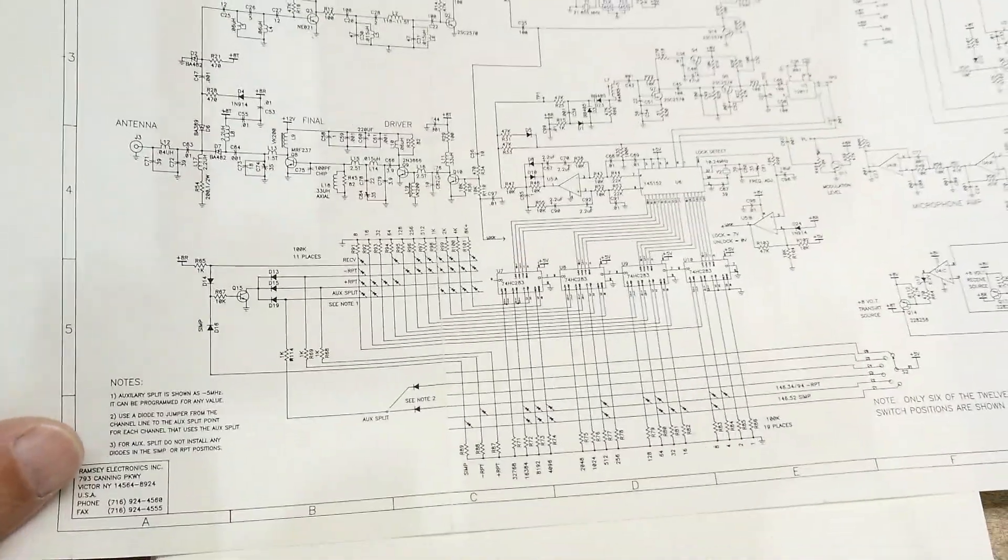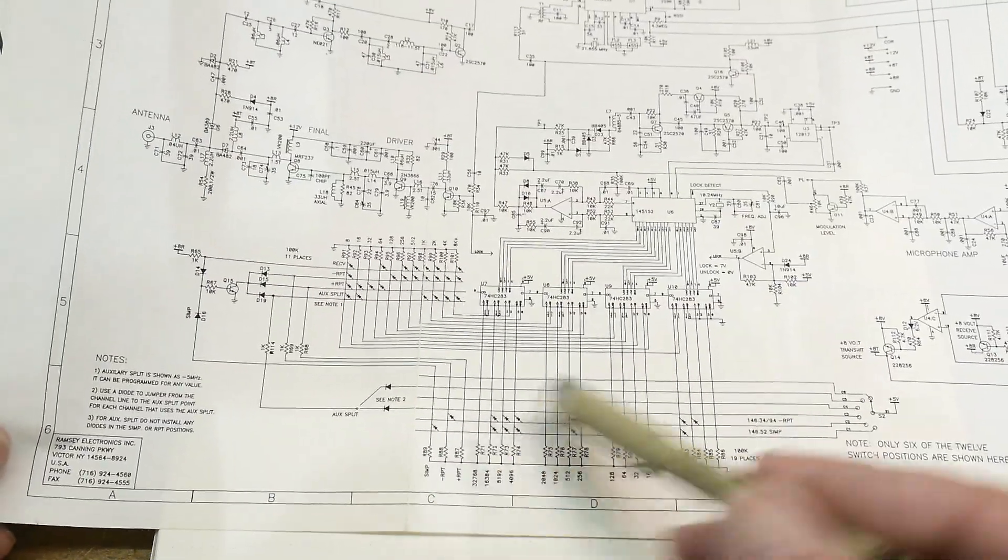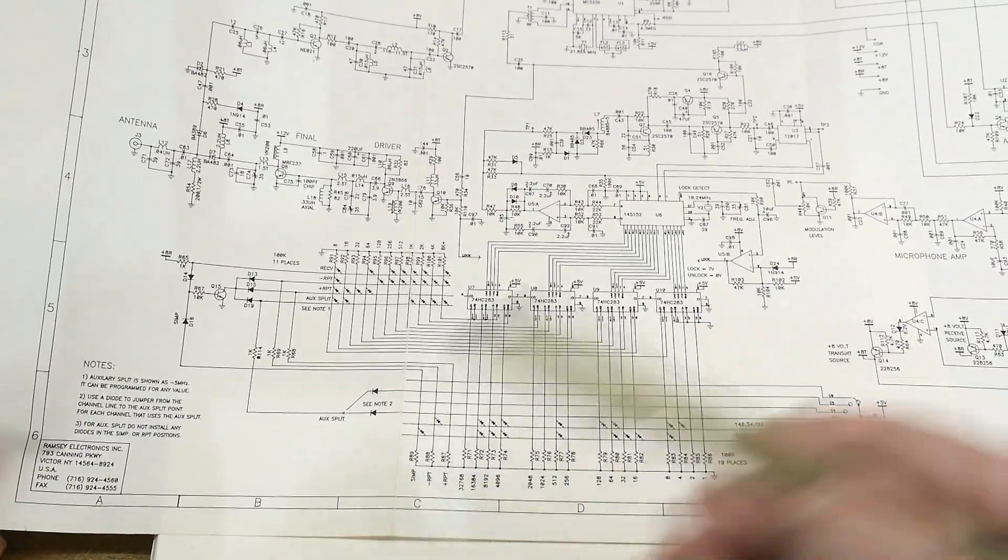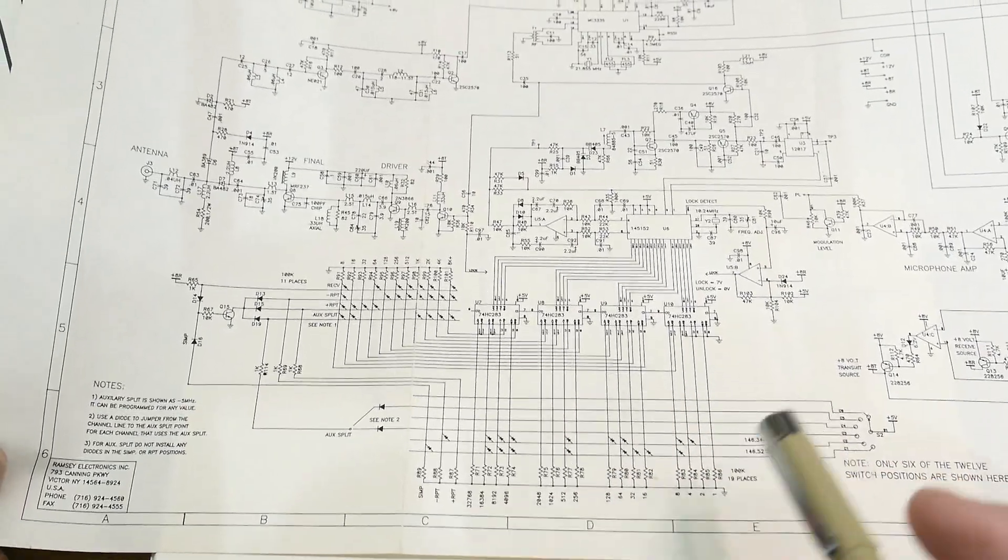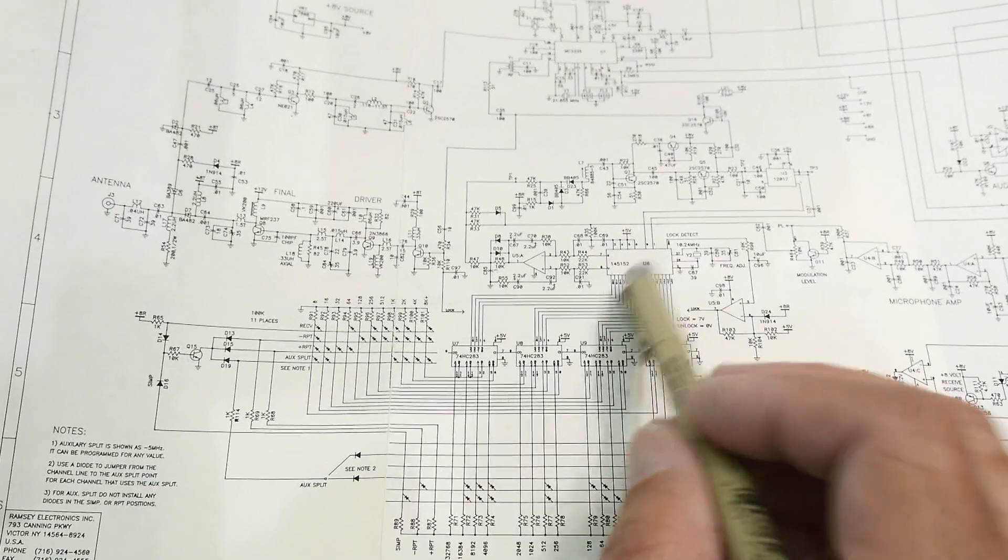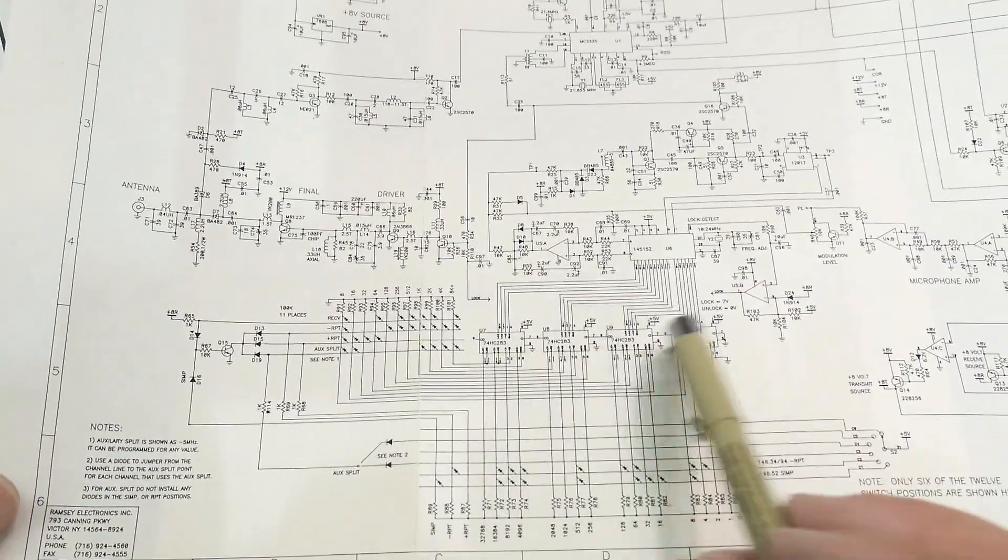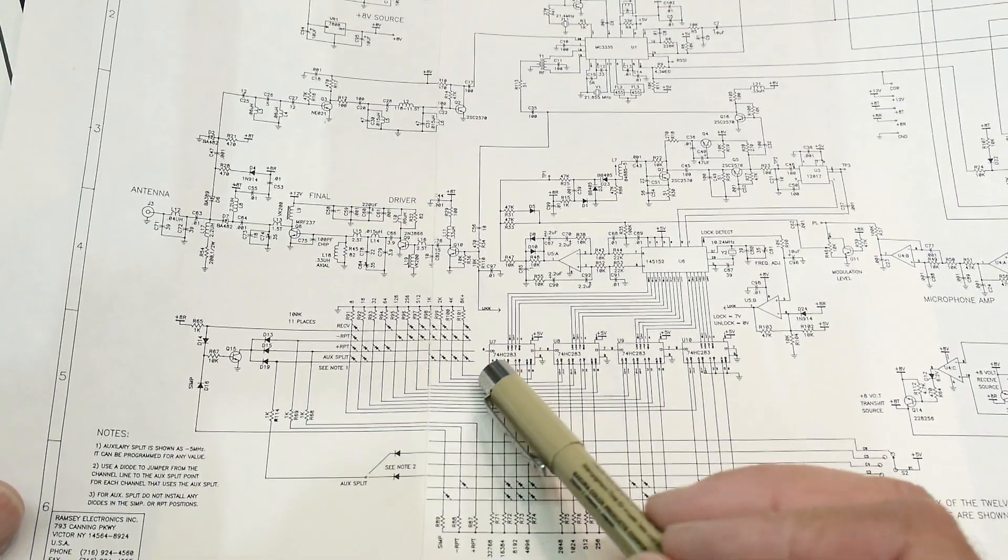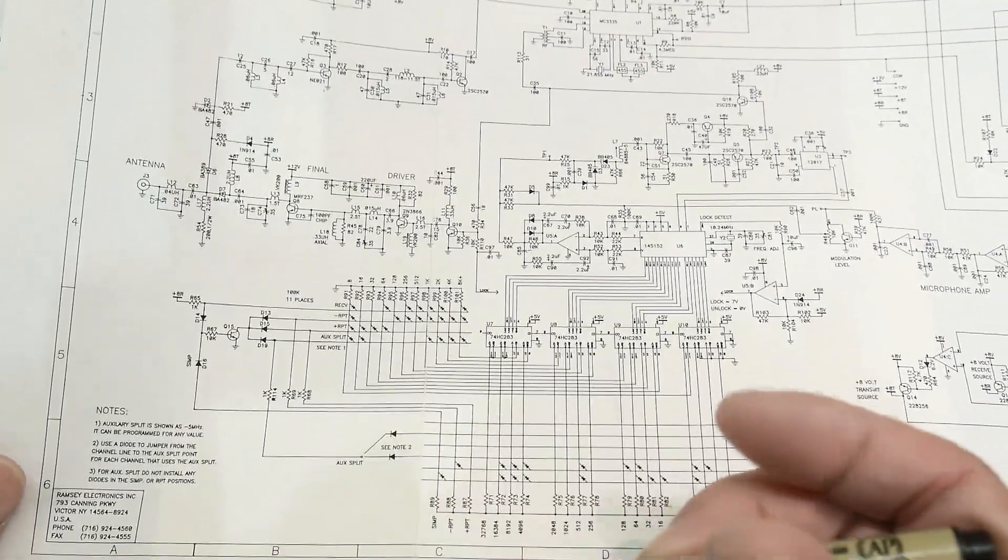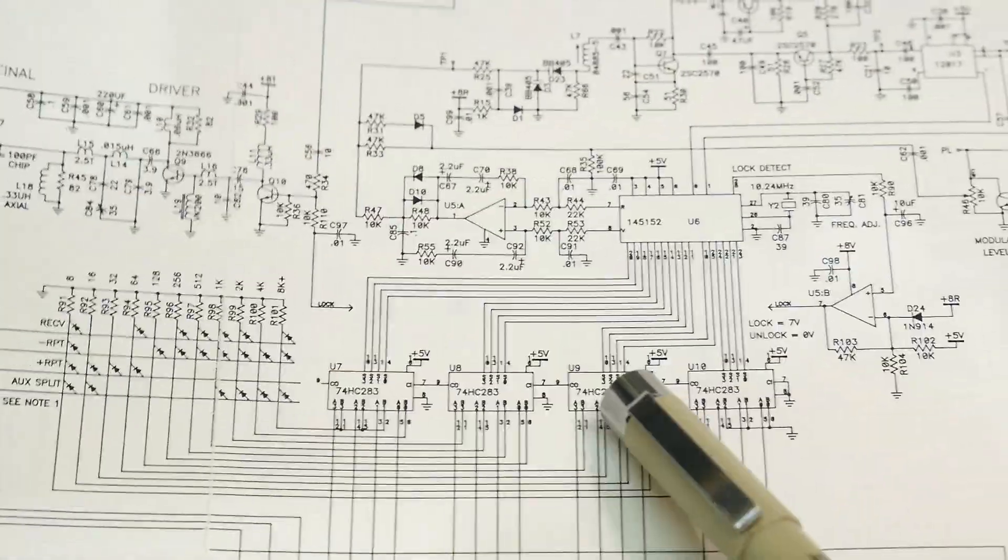I've mentioned the diode programming - just ones and zeros - and showed how this device is programmed. But those ones and zeros don't go directly into the phase-lock loop part; they go through these other chips here, these four chips. These are 74HC283s. What is that type of part? That type of part is an adder.